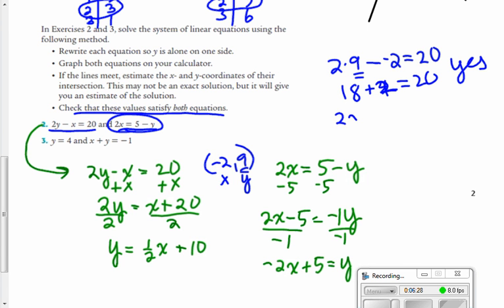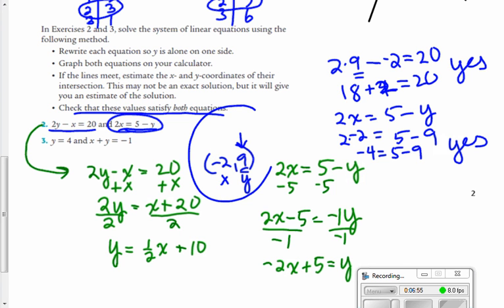Second equation, 2x equals 5 minus y. Again, we're going to substitute 9 for y. And negative 2 for x. And we get negative 4 is equal to 5 minus 9. And that's also true. And so what we're showing is that our estimate of our solution on our calculator proves to be true, that it satisfies both equations. So it is indeed the solution to that system. You can go ahead and try number 3 if you want. See if you can, if you graph that on your calculator, see if you can find where they intersect.